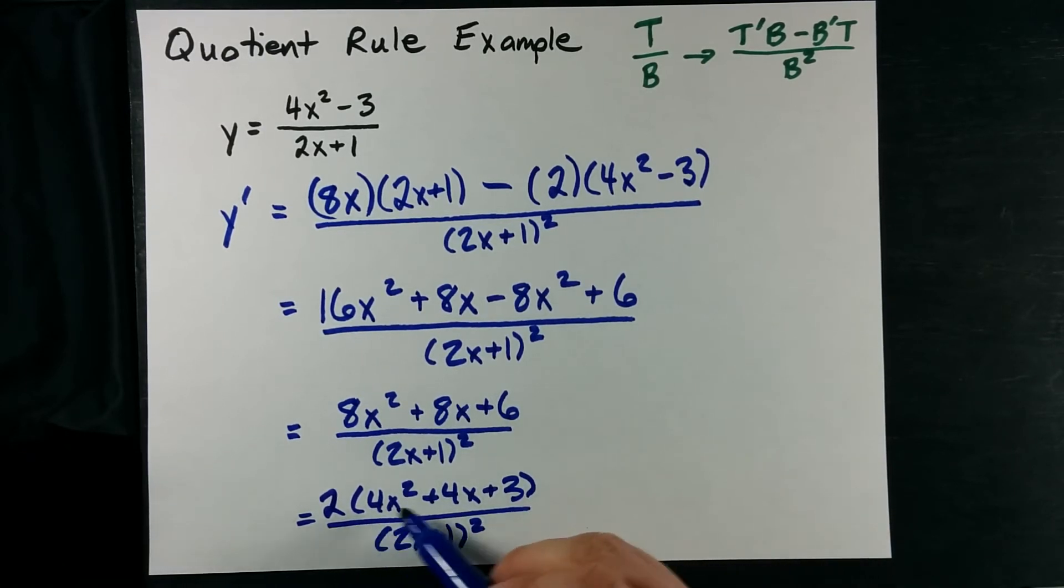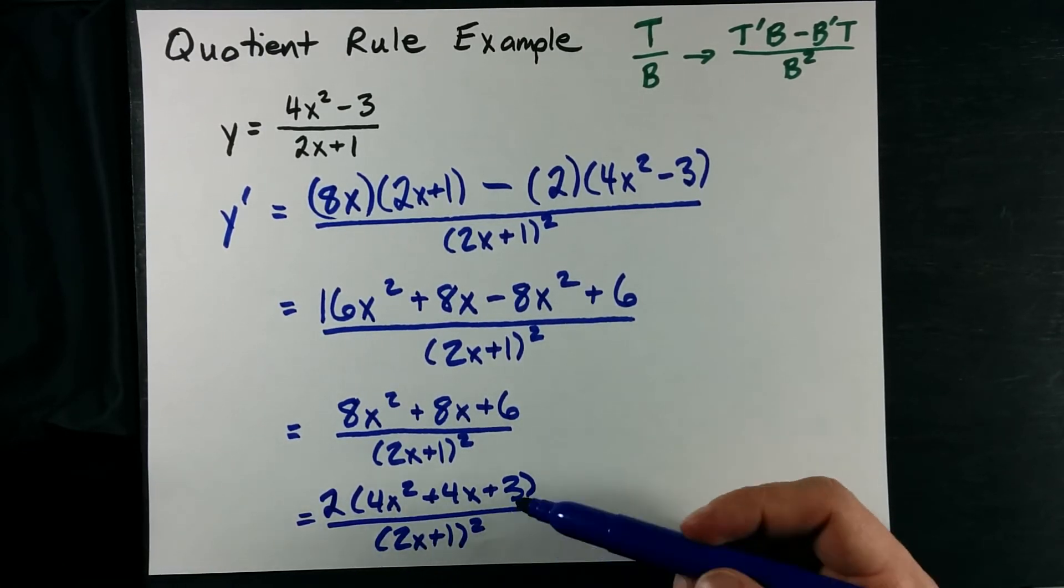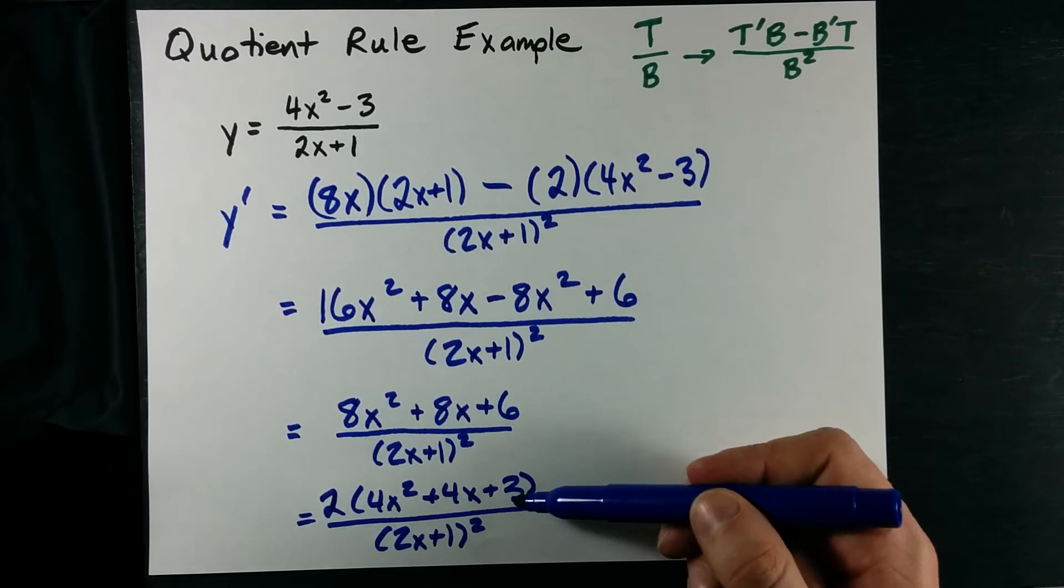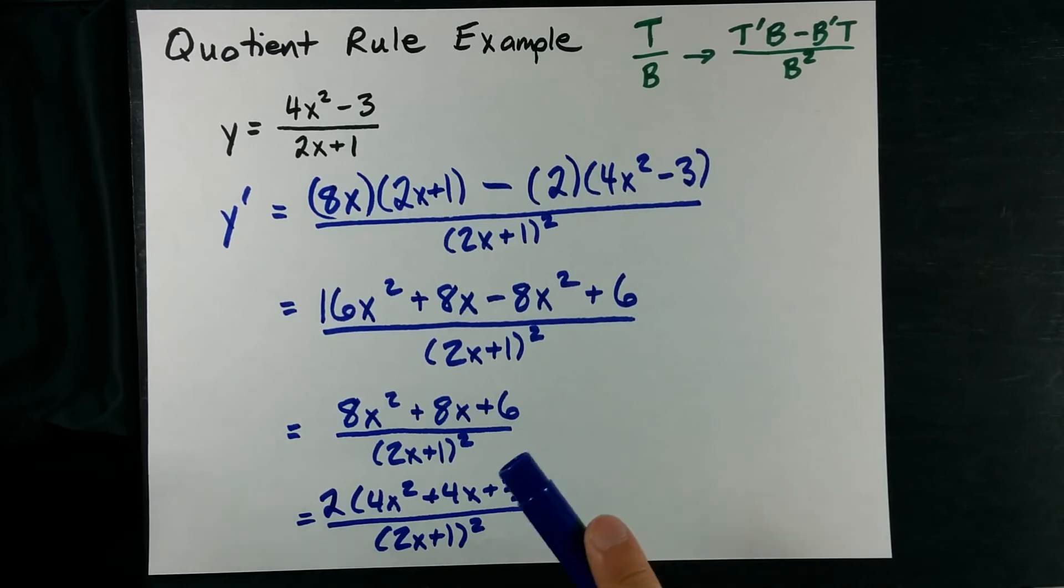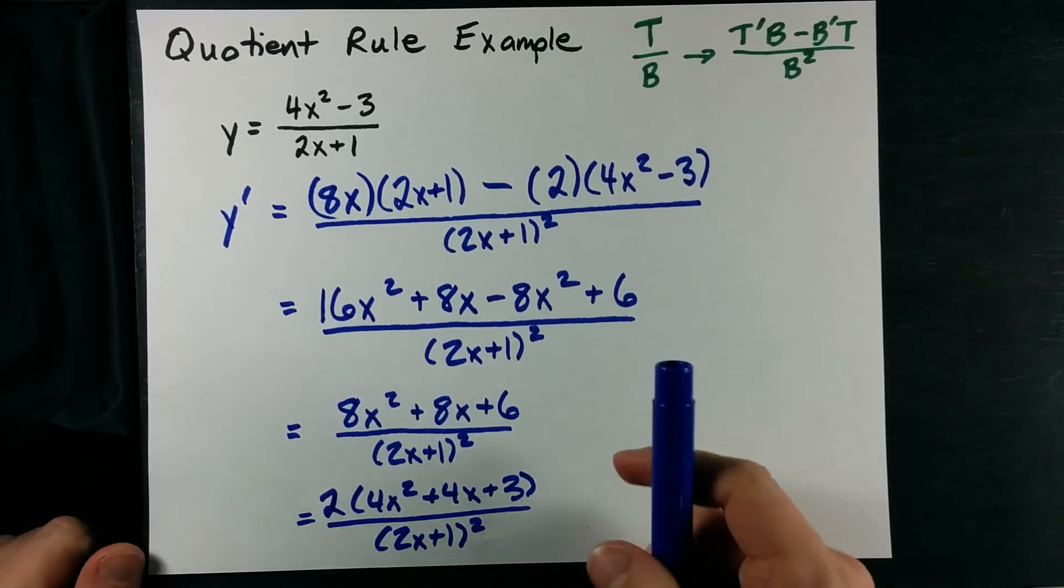All over 2X plus 1 all squared. Can I factor this? I need two numbers that multiply to positive 12 and add to positive 4. No, I don't think those numbers exist.